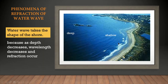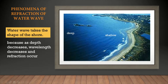So because of this change of speed at different depths, refraction occurs. This different depth causes refraction to take place. Now look at this photograph here. You can see the shape of the shore curves this way, and this is the shape of the sea. We see that the shape of the sea is the same as the shape of the shore.